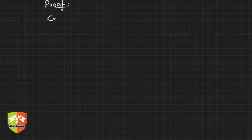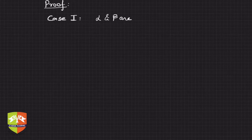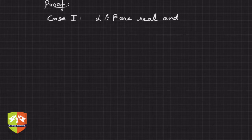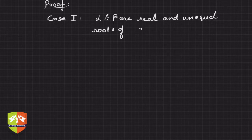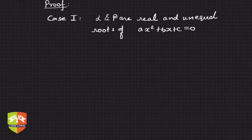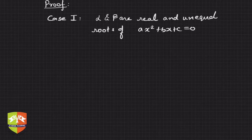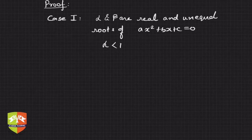We will take the proof case by case. Case 1: Let α and β be real and unequal roots of ax² + bx + c = 0. In Case 2, we will take when α and β are real and equal. In Case 3, we will take α and β as non-real, that is complex. For Case 1, let us assume α < β, since if the roots are real and unequal, one will definitely be less than the other.